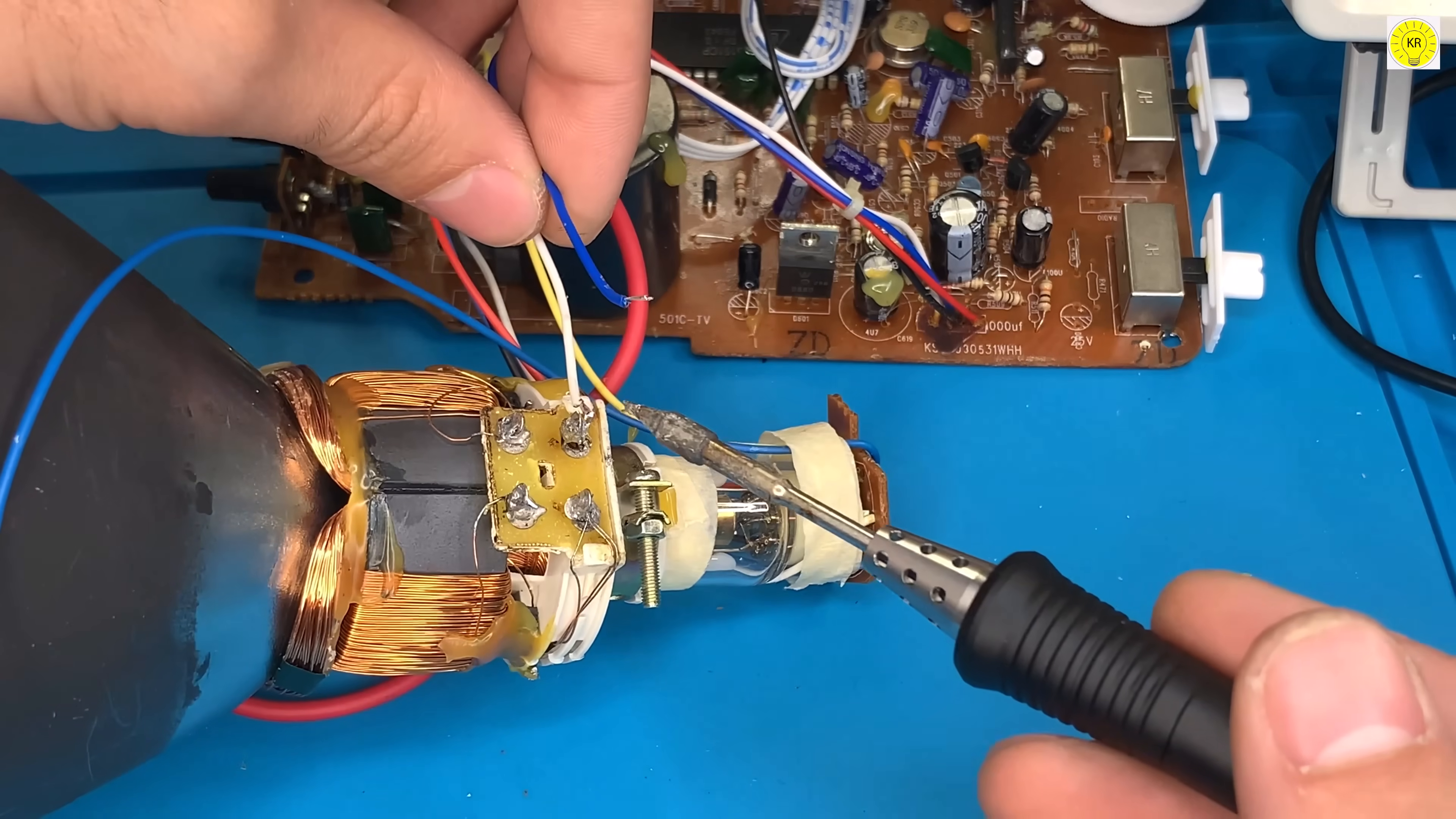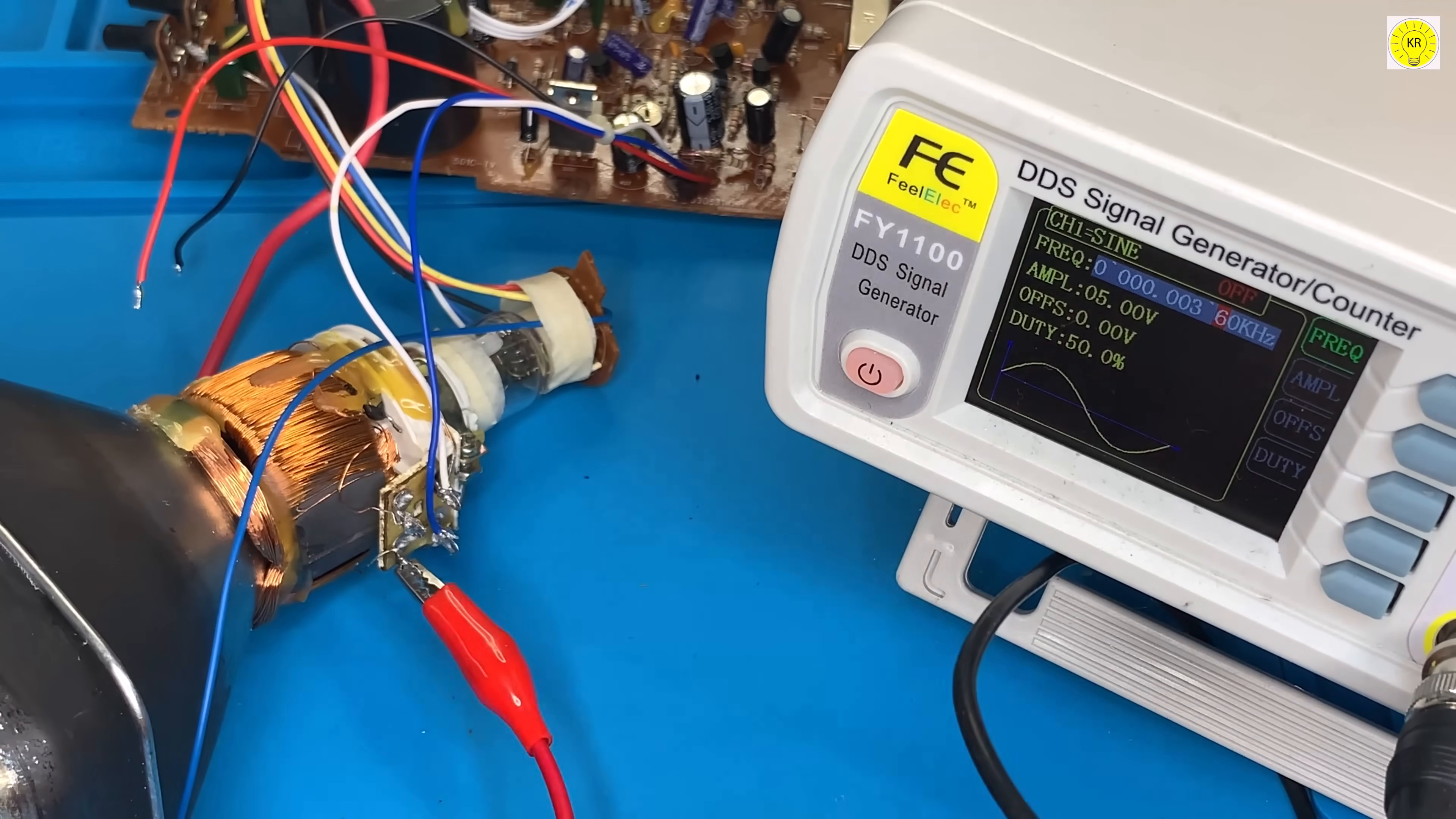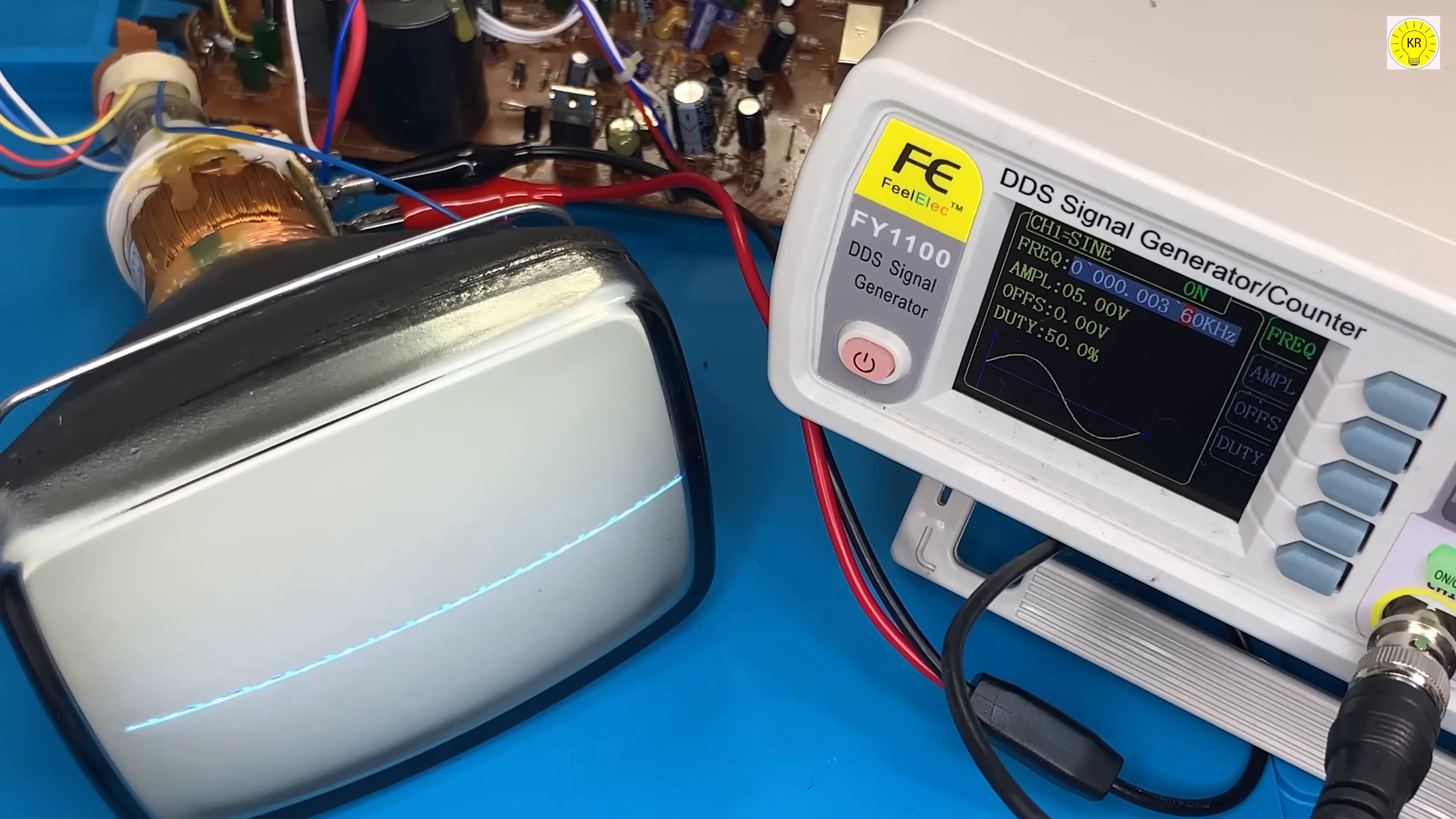Now we connect the wires of the horizontal coil and inject the signal from the frequency generator into the vertical coil. We notice that a horizontal line appears. And when we inject the signal, this line starts moving randomly.